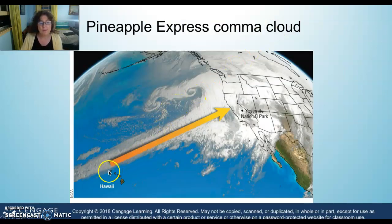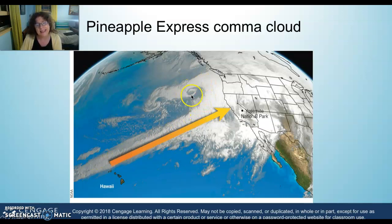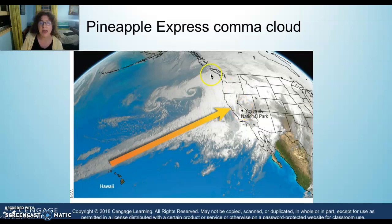A beautiful example is the Pineapple Express comma cloud — a river of air coming in from Hawaii, forming a cyclonic comma right off the Pacific Northwest coast and dumping an enormous amount of rain in Yosemite. This actually closed Yosemite for almost a year due to flooding and the reconstruction needed. The snow falls in the northwest quadrant of the storm, while the rain is in the eastern quadrant.